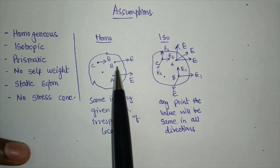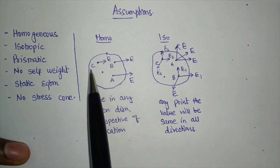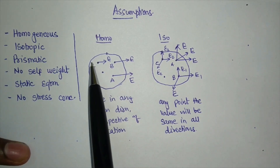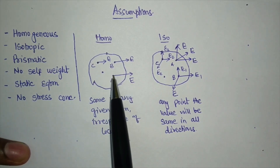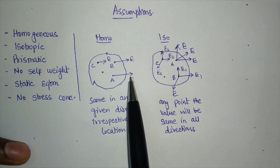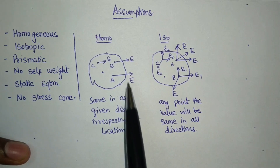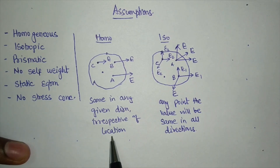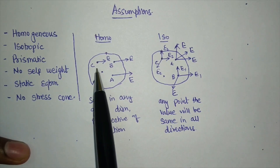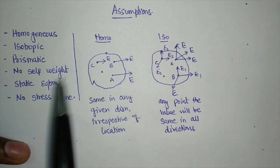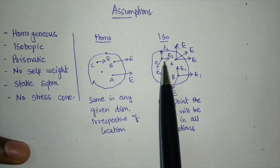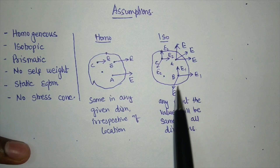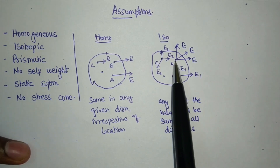Homogeneous nature means if I take any body and choose different points — point A, point B, and point C — then in any given direction, the value of the engineering property will be the same at all points. So homogeneity means the value will be the same in any given direction irrespective of location. For isotropic nature, the value will be the same at any given point in all directions, but if you change the location, the value may change.